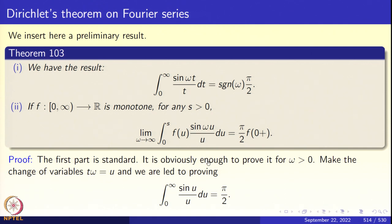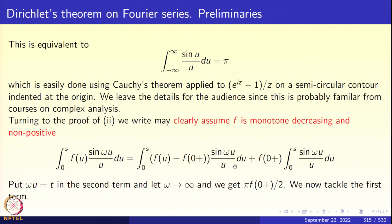The first part is standard. It is clearly enough to prove it for ω positive, because if ω is negative, sin is an odd function and both sides change sign. Make the change of variables tω = u; the integral simply becomes ∫₀^∞ (sin u / u) du. We just have to prove that ∫_{−∞}^{∞} (sin u / u) du = π. But this is elementary complex analysis: apply Cauchy's theorem to the holomorphic function (e^{iz} − 1)/z on a semicircular contour indented at the origin. You have probably seen this in your complex analysis course; I will leave it to you to verify this.